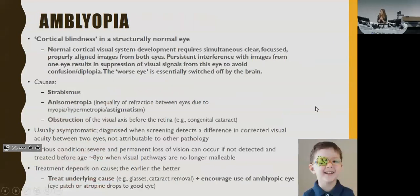Amblyopia is the feared complication of untreated strabismus, among other causes. If untreated beyond age eight, the brain switches off the visual signal from the affected eye to eliminate the confusion in visual fields — also known as cortical blindness, because the eye itself is fine but the cortex suppresses it. It's permanent after the visual pathways mature around age eight. Treatment includes patching to encourage use of the amblyopic eye before it's completely switched off.